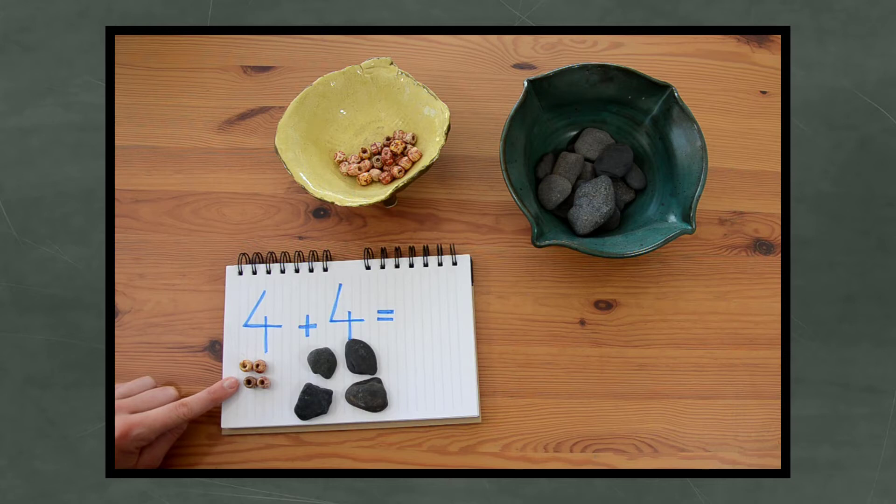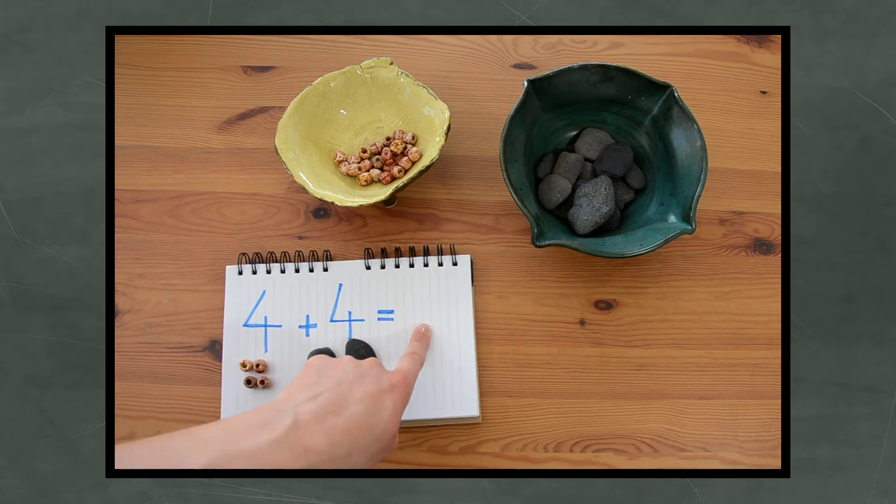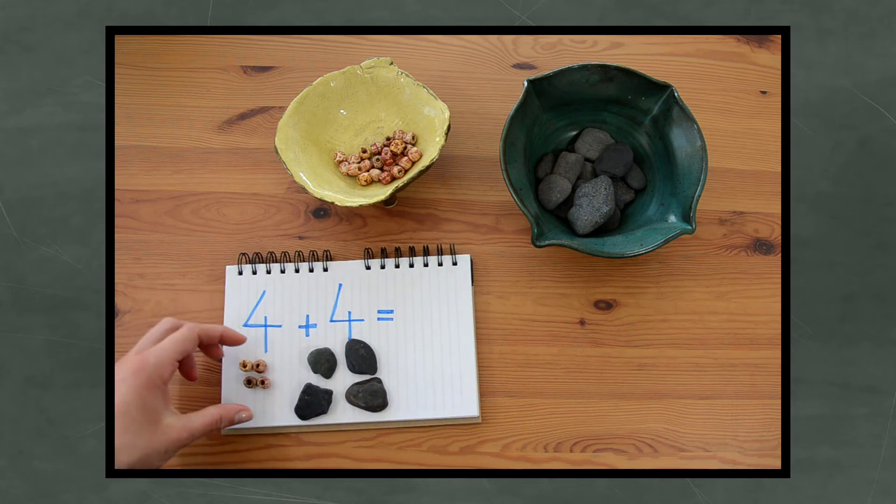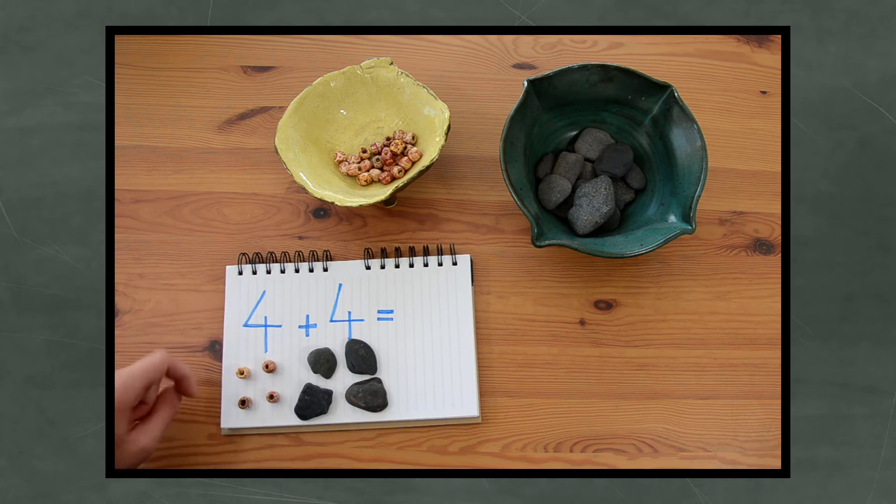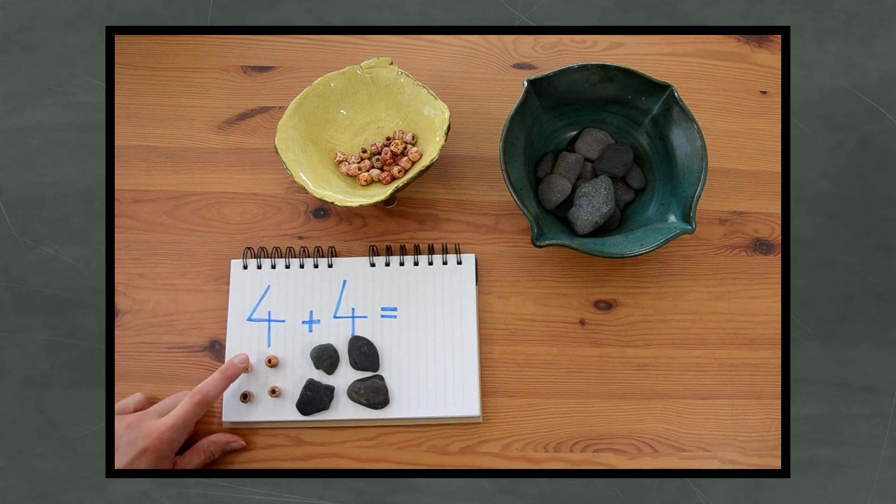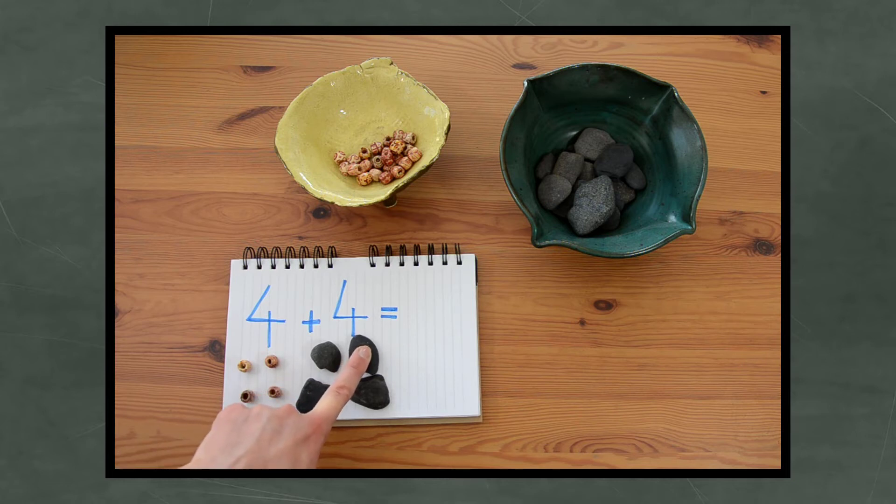So I've got 4 beads and 4 stones. Now I need to find out how many I have all together to find the answer. Let's count. 1, 2, 3, 4, 5, 6, 7, 8. We've got 8 again.